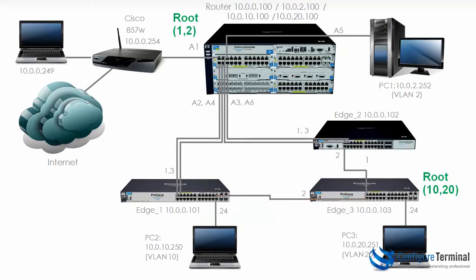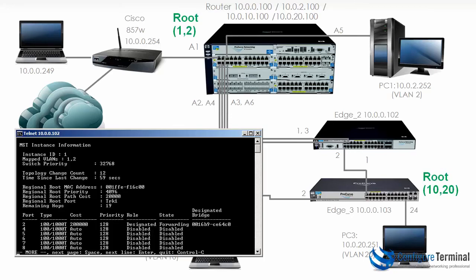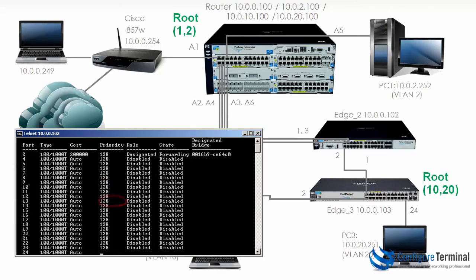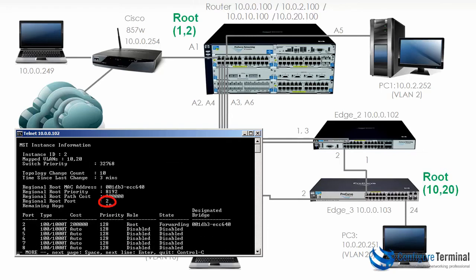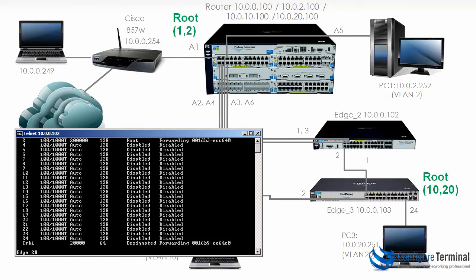I've removed the blocking and forwarding values on this topology because those have now changed since the roots in the topology have changed. On edge 2 for instance 1, the root port is TRK1 — TRK1 is forwarding with port role 'root'. But looking at instance 2, port 2 is the root on edge 2 and that port is forwarding, while TRK1 is a designated forwarding port. So there are two root ports on edge 2 because there are two separate instances.